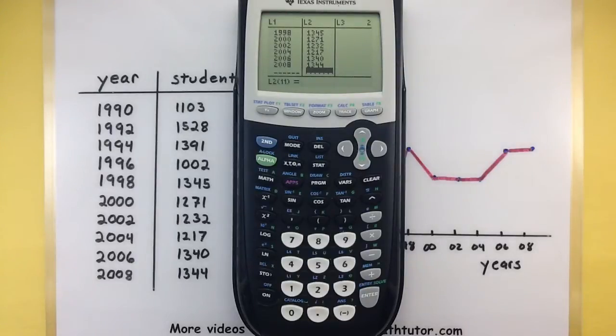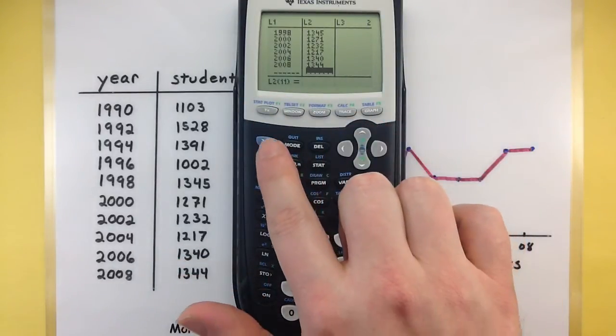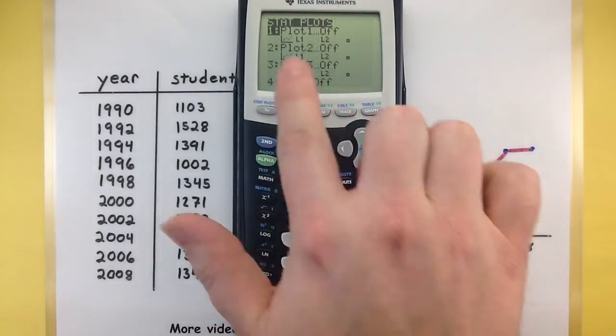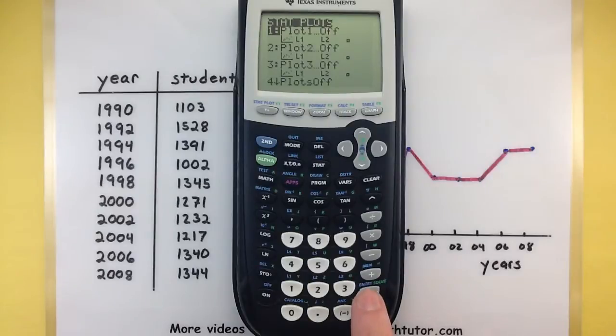Let's go ahead and set up our stat plots so we can get a little bit closer to seeing what this thing looks like. The stat plot is right above your y equals, press the second button and then up to stat plot. The first plot is usually highlighted so go ahead and press enter.